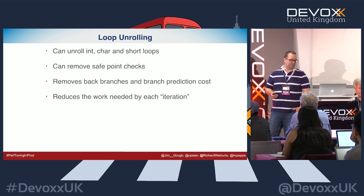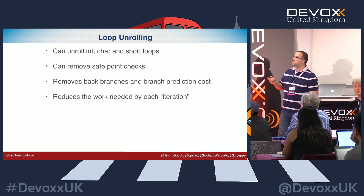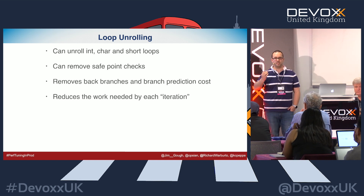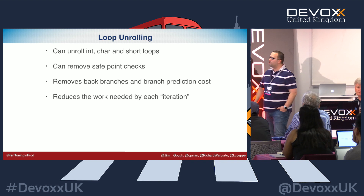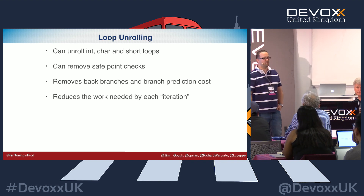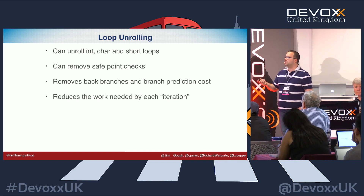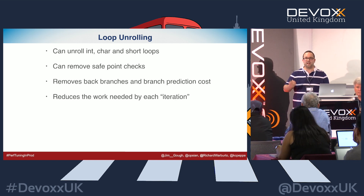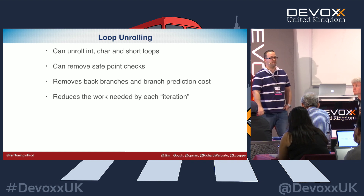In summary for loop unrolling: you can enroll ints, chars, and short loops, and you can remove safepoint checks in int loops when you unroll. Those go-tos can be costly when you think about branch prediction and going back in code. At a more mechanical sympathy level, you're dealing with back-branches which increase execution cost. Unrolling also reduces the work needed for each iteration, since even the standard iterator is creating new pieces for each loop and incrementing.